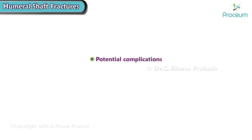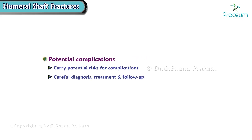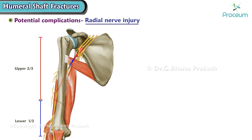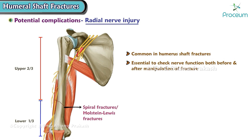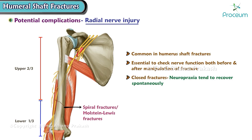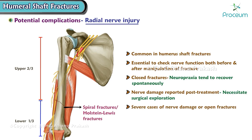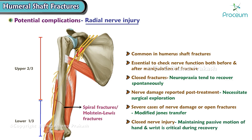Potential complications of mid-shaft humerus fractures include radial nerve injury, which is common especially with spiral fractures or Holstein-Lewis fractures. It is essential to check nerve function both before and after fracture manipulation. While most closed fractures resulting in neuropraxia tend to recover spontaneously, any nerve damage reported post-treatment may necessitate surgical exploration. In severe cases or open fractures, a modified Jones transfer might be required. For patients with closed nerve injury, maintaining passive motion of the hand and wrist is critical during recovery.